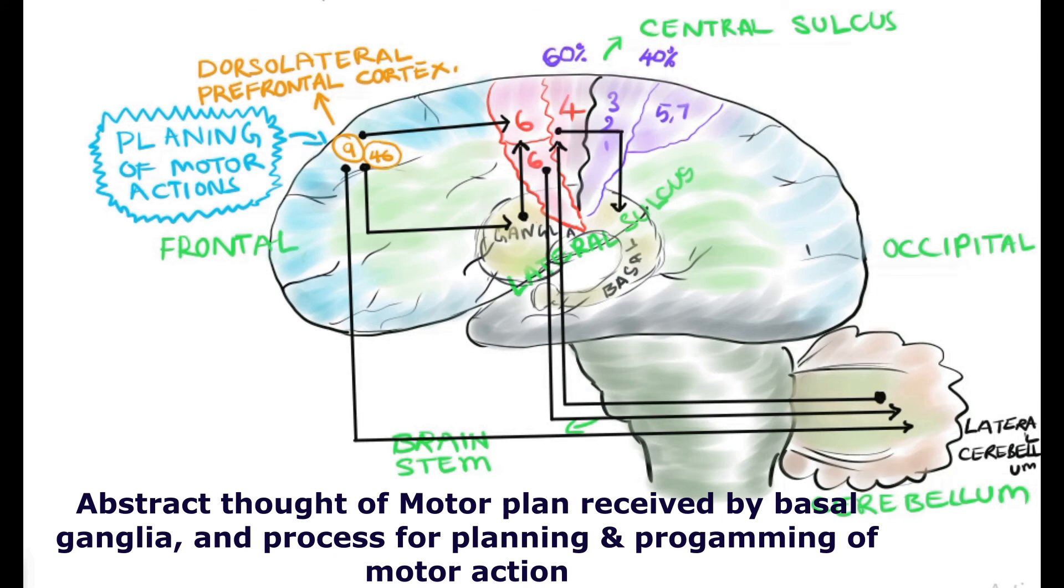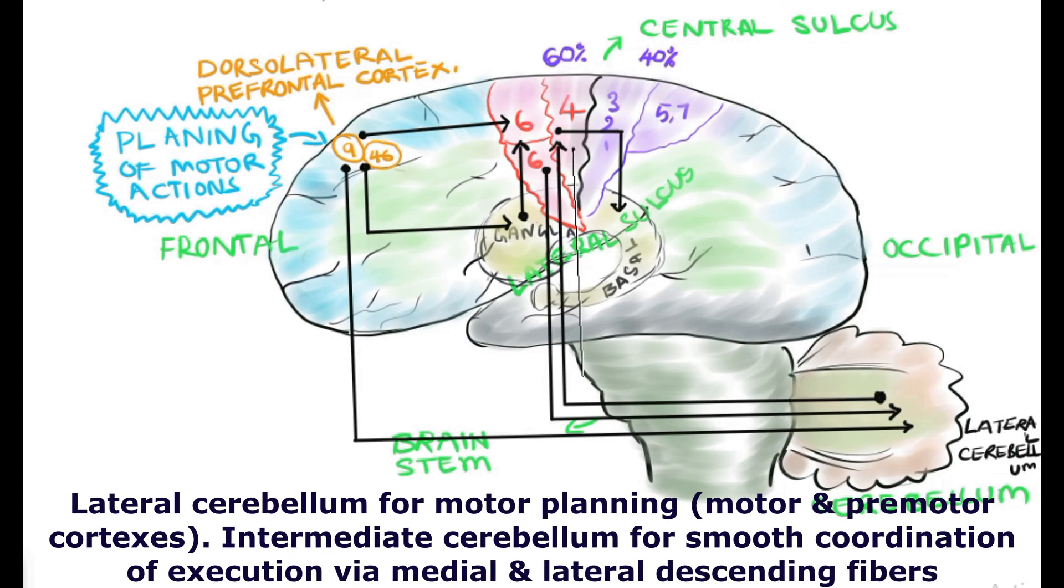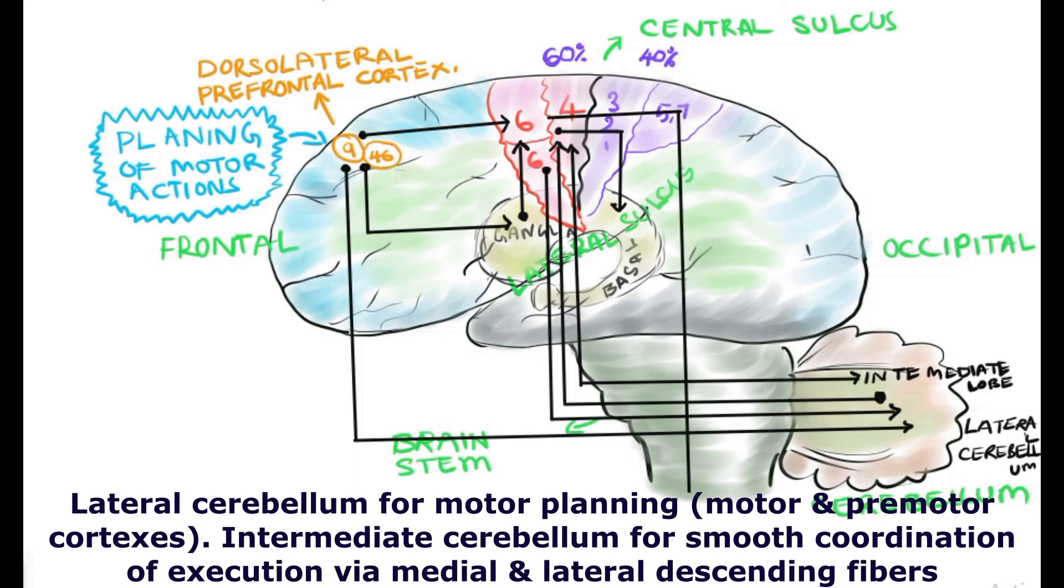The intermediate lobe of the cerebellum also receives some information from the motor cortex and sends back some information to the same motor cortex.